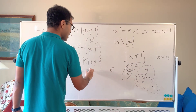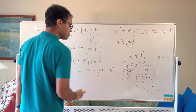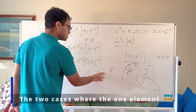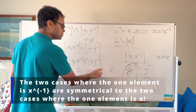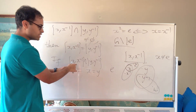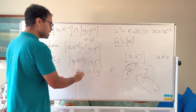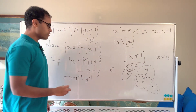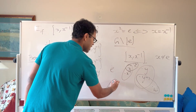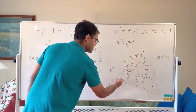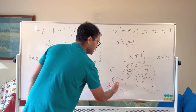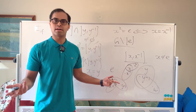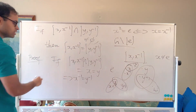There are two cases: either that one element is x equal to y, or x equal to y inverse. Let's first consider the case where x equals y. Well, in that case x inverse equals y inverse. You can visualize it: {x, x⁻¹} and {y, y⁻¹} — if x equals y, then x inverse and y inverse have to match. So the two sets are equal. That case is a bit trivial.